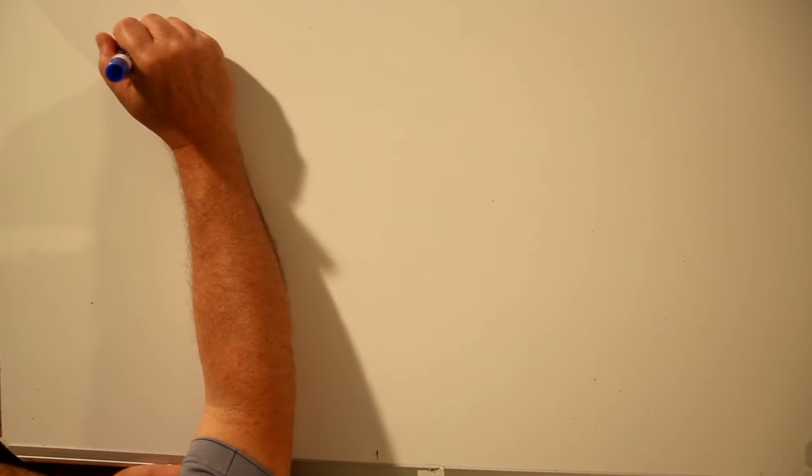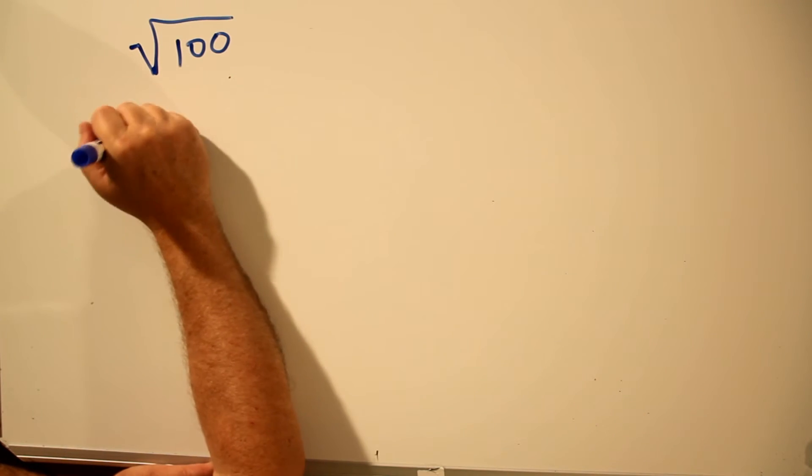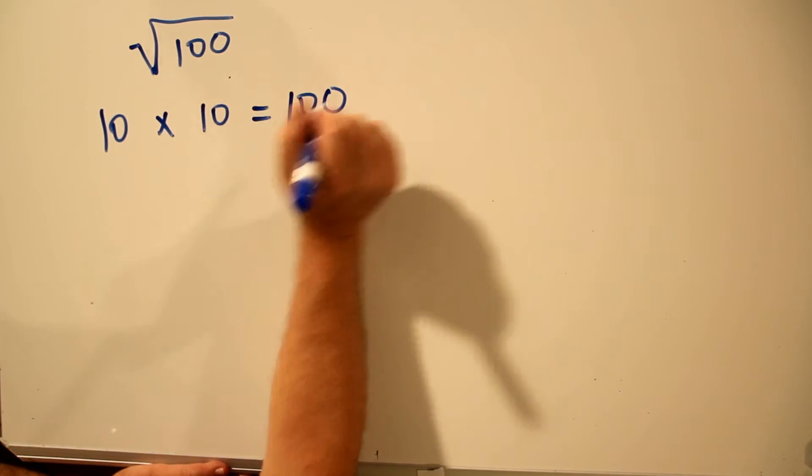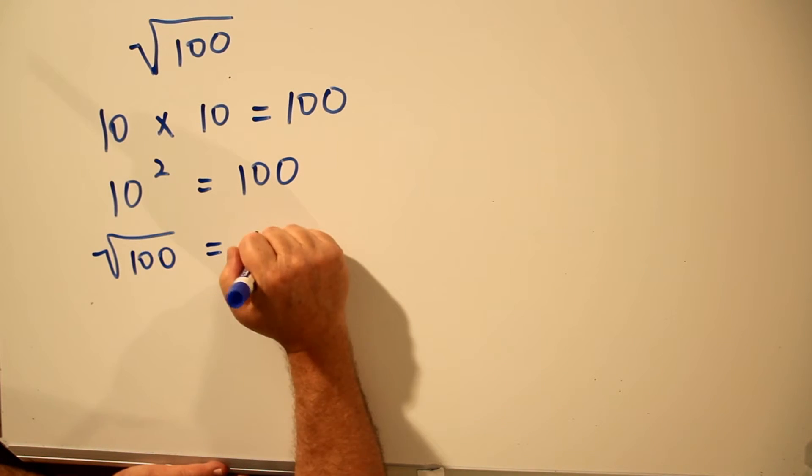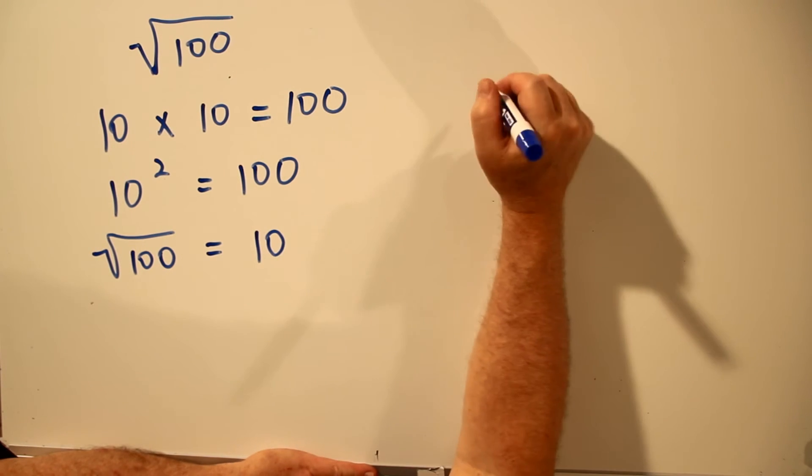How do we find the square root of 100? Well, 10 times 10 equals 100. 10 squared equals 100. Therefore, the square root of 100 is 10.